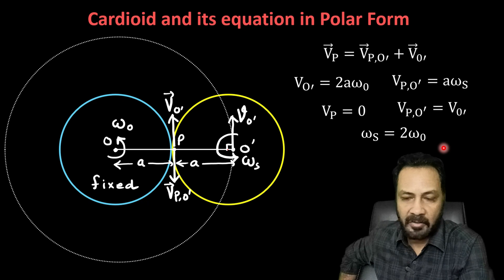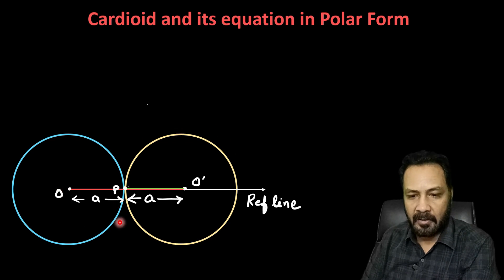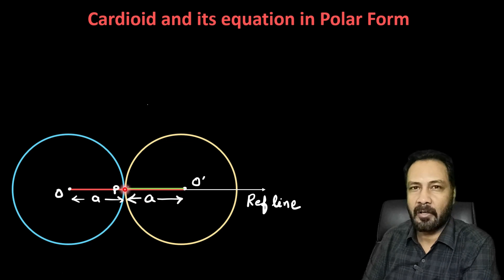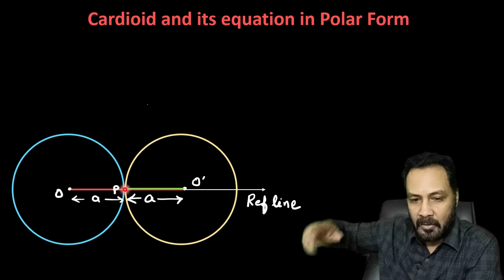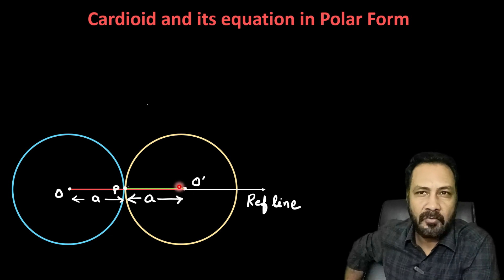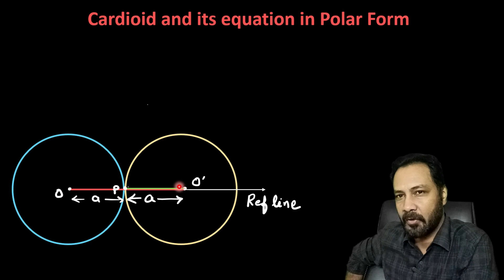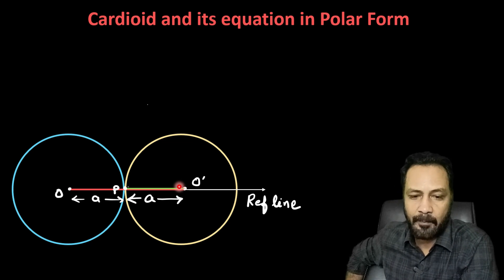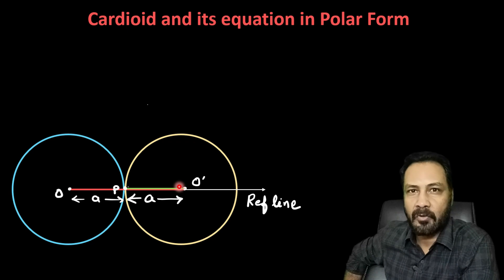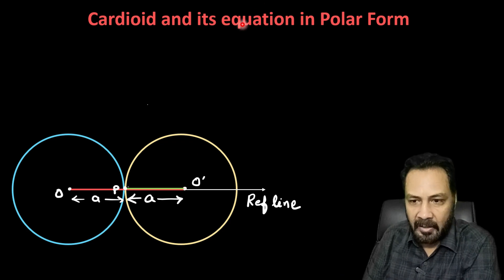Now using this relationship we will derive the polar form of the equation. The fixed circle has center O and the rolling circle has center O'. The line O–O' rotates with orbital angular velocity omega_o. P is the initial point of contact — the painted point. As the circle rolls, the trajectory of that painted point is the cardioid. The line O'P rotates with spin angular velocity omega_s, which we showed is twice omega_o.